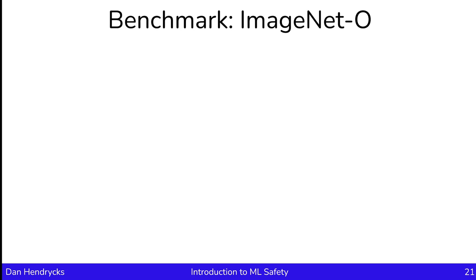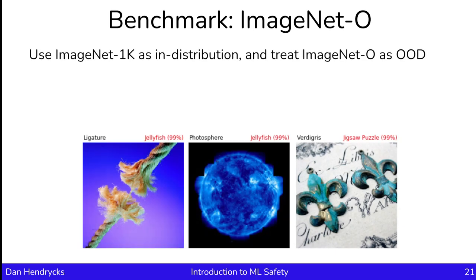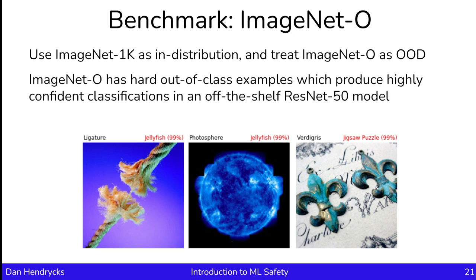A benchmark for larger-scale image anomaly detectors is ImageNet-O. With ImageNet-O, one treats ImageNet-1K as the in-distribution dataset and ImageNet-O as OOD. ImageNet-O has hard, out-of-class examples produced similarly to natural adversarial examples, except these examples are chosen to fool a ResNet-50 model and don't belong to any ImageNet-1K classes. We take examples from classes outside ImageNet-1K, show them to ResNet-50, and keep examples that have high confidence but actually don't belong to any of the 1K classes. We use ResNet-50 largely because it's a popular off-the-shelf model, and because examples that fool ResNet-50 tend to successfully transfer to other models as well.